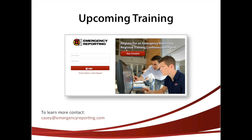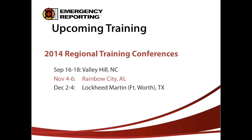If you go to eventbrite.com and type in emergency reporting, you'll see the closest event near you — that's eventbrite.com, all one word. Our next regional training conferences are going to be in September, a couple weeks from now, in Valley Hill, North Carolina. We've got well over 30 people attending that one. The one following that in November will be in Rainbow City, Alabama. Then we have an event at Lockheed Martin in Fort Worth, Texas the first week of December. If you're near any of those and would like to join us, contact Casey or check out the Eventbrite site for more details.